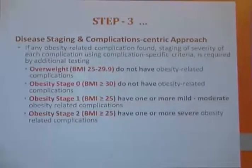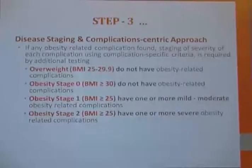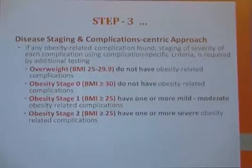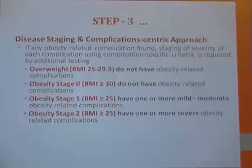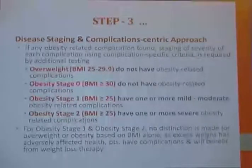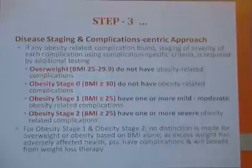In stage three, the disease is staged as overweight, obesity stage zero, stage one, and stage two, depending on severity of complications. Overweight is defined as BMI just above 25 and below 30 with no obesity-related complications. Stage zero is BMI above 30 with no complications. Stage one has mild to moderate complications with BMI potentially below 25. Stage two has severe complications. In obesity stage one and two, no distinction is made based on BMI alone, as excess weight has adversely affected health and patients will benefit from weight loss therapy.